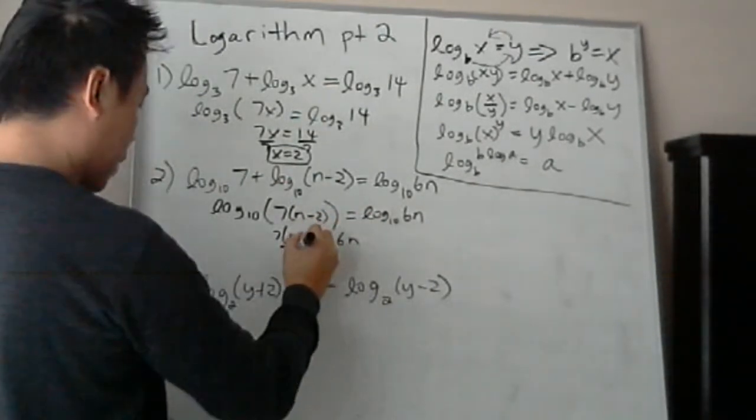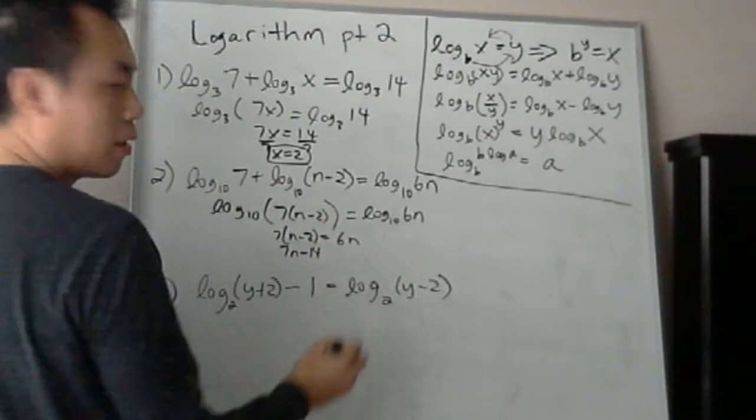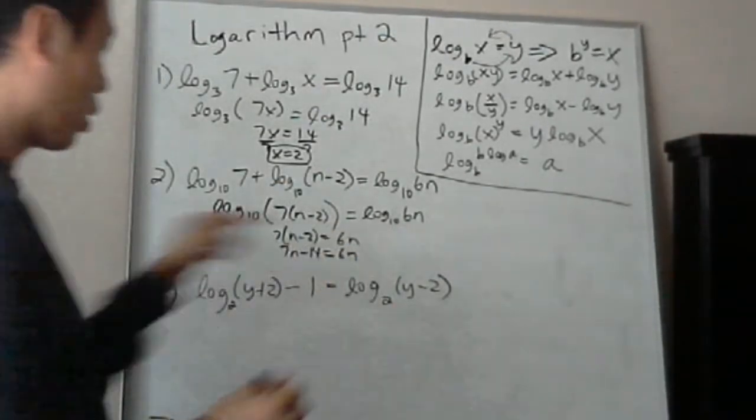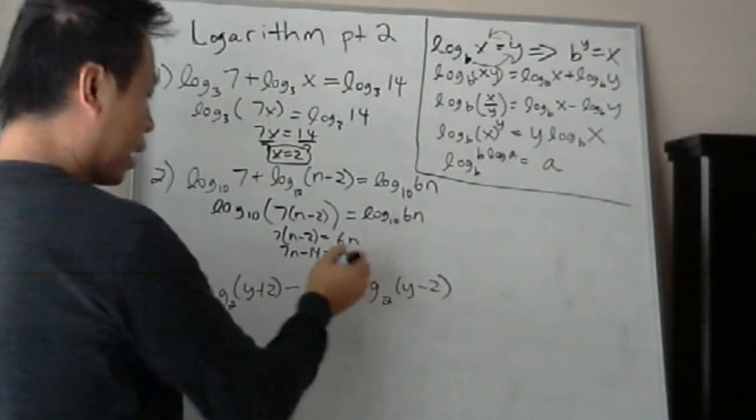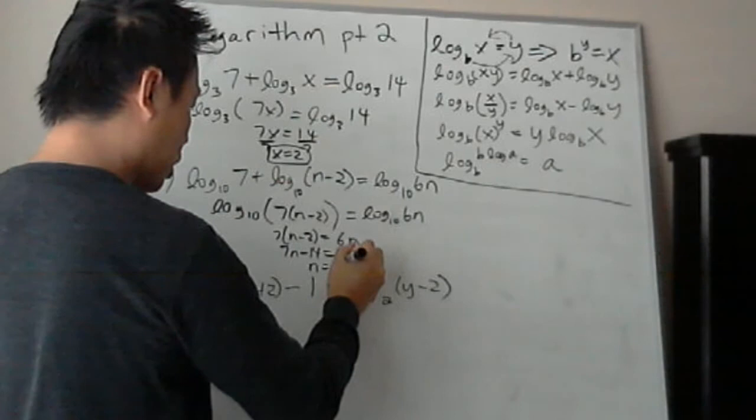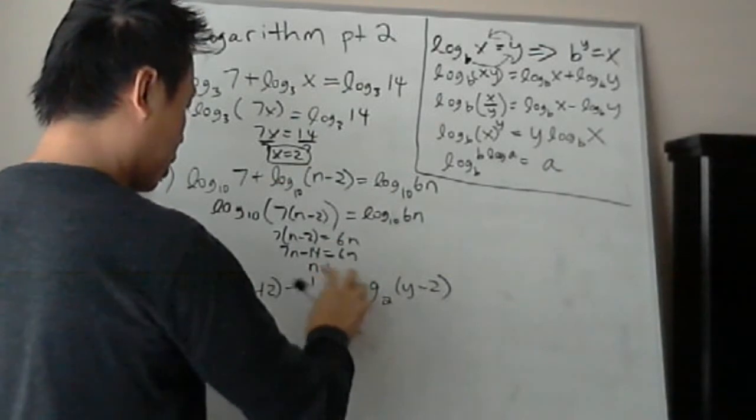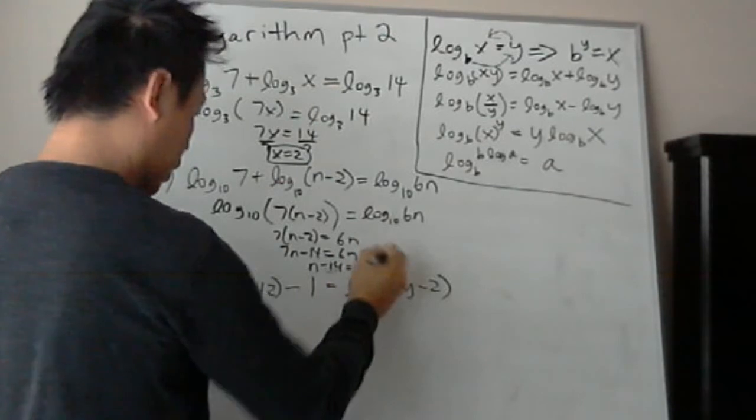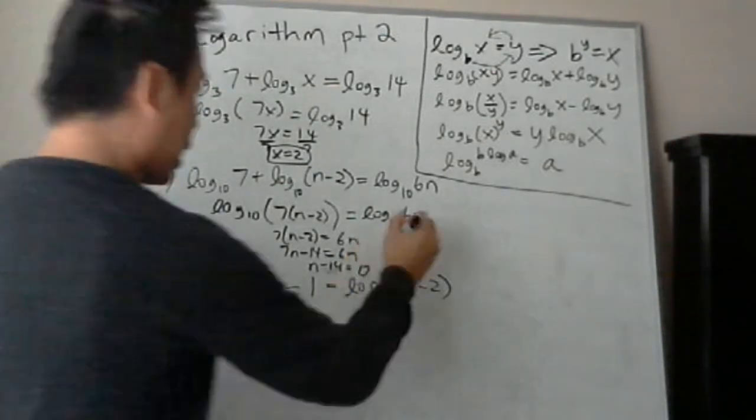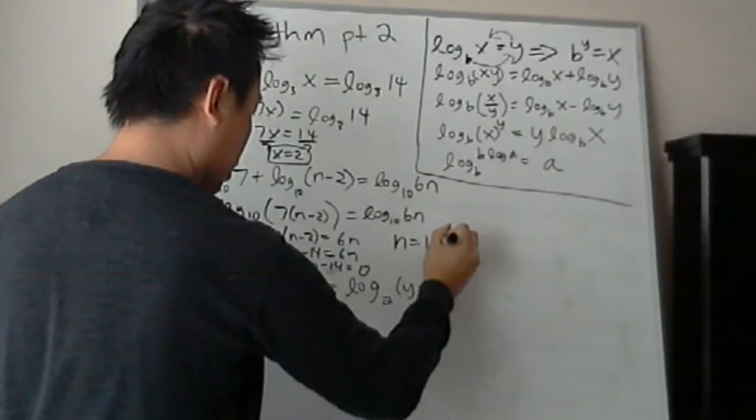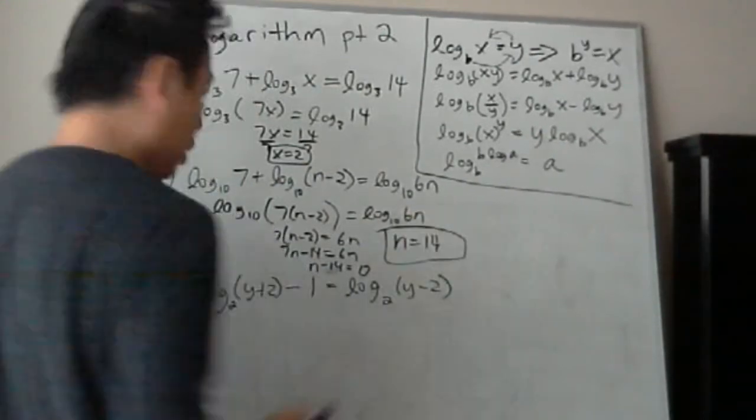So that's 7n minus 2 equals to 6n. Then distribute it, 7 times n minus 14, right? What I do on both sides, I can subtract 6n on both sides, so you get n minus 14, I don't want to go too fast, equals to 0. And then add 14 on both sides, and you get n equals to 14.